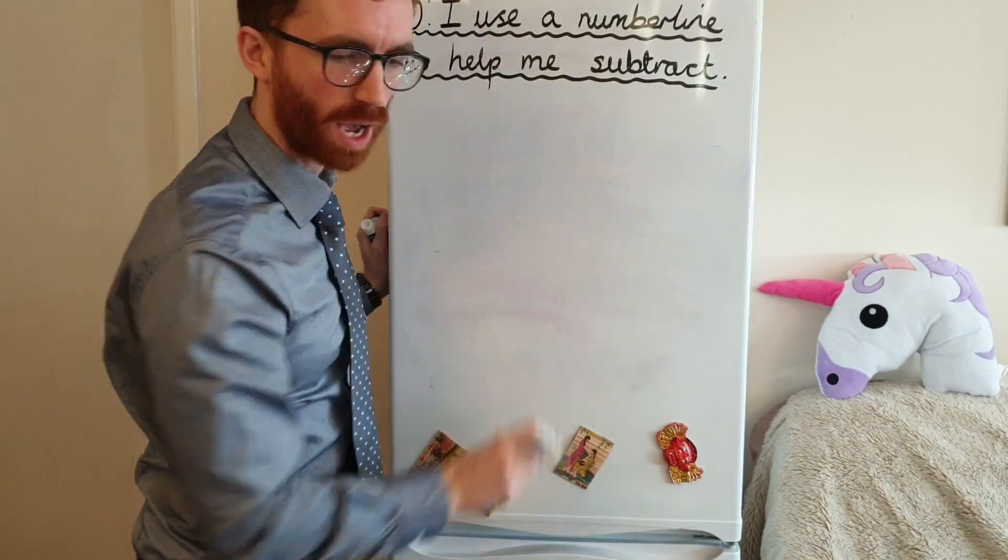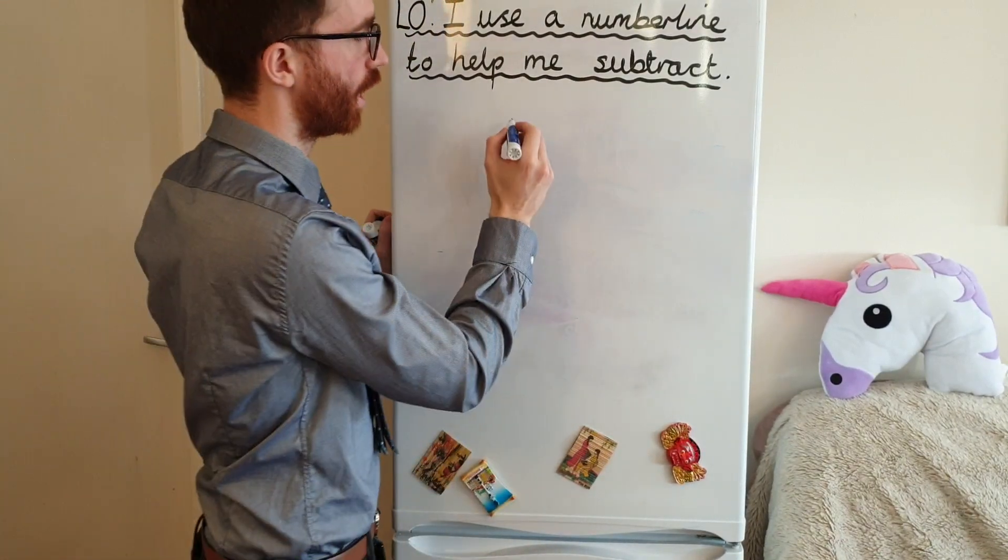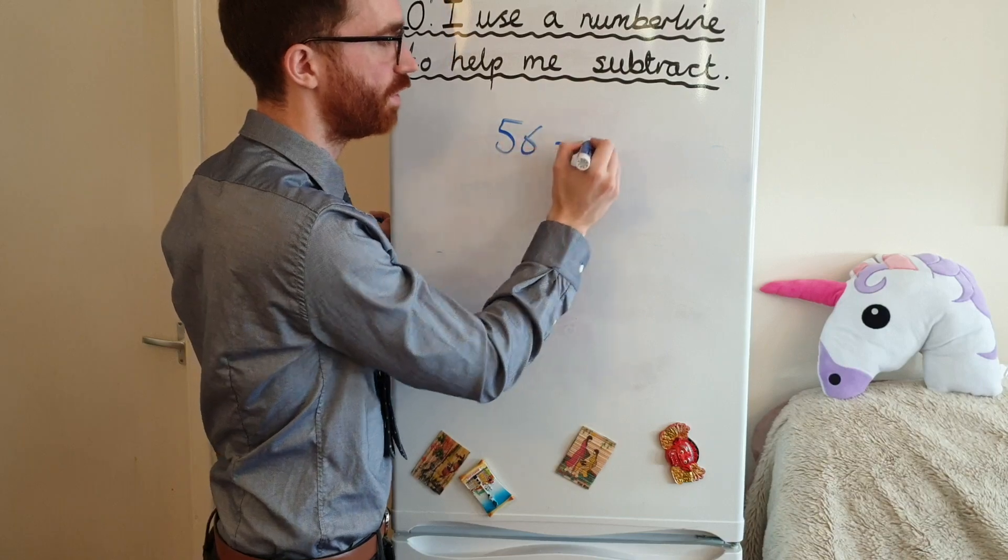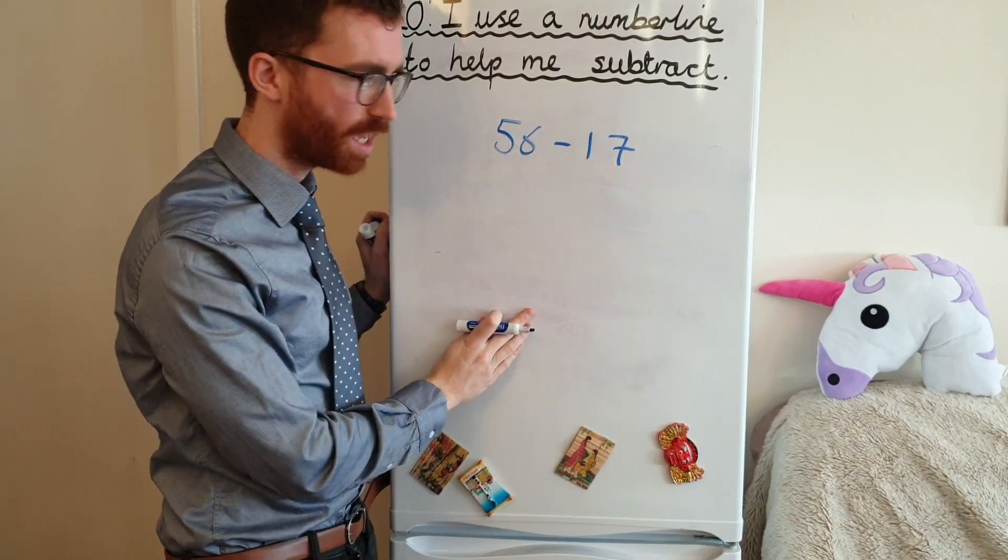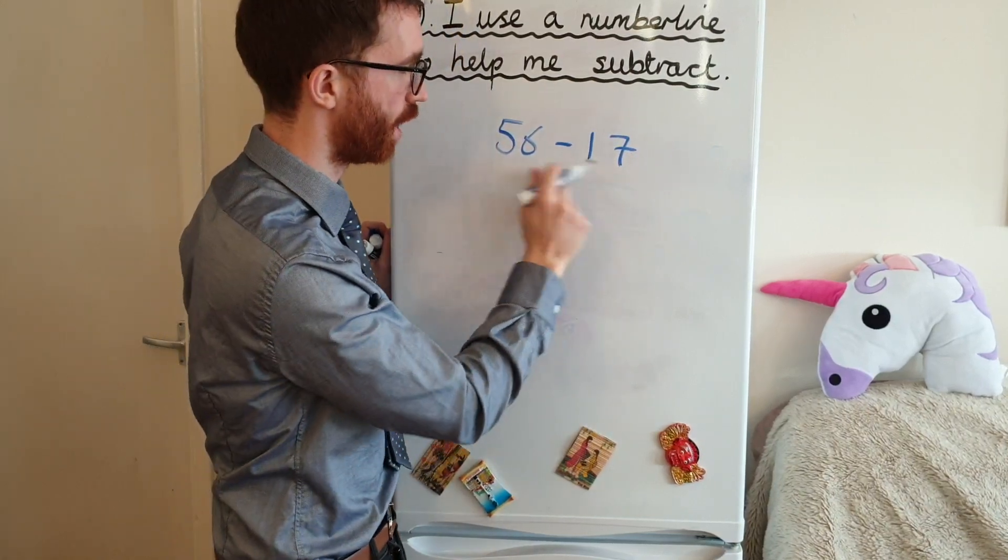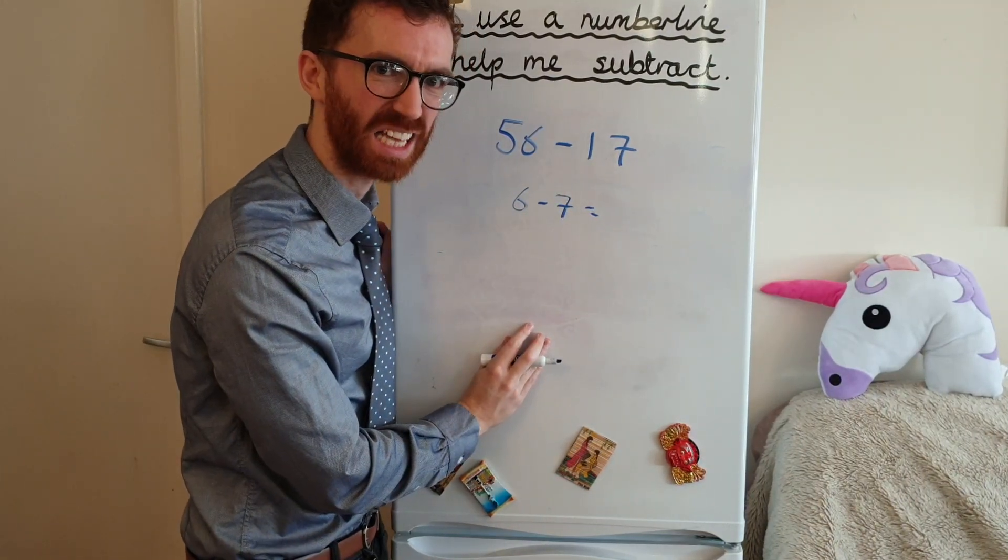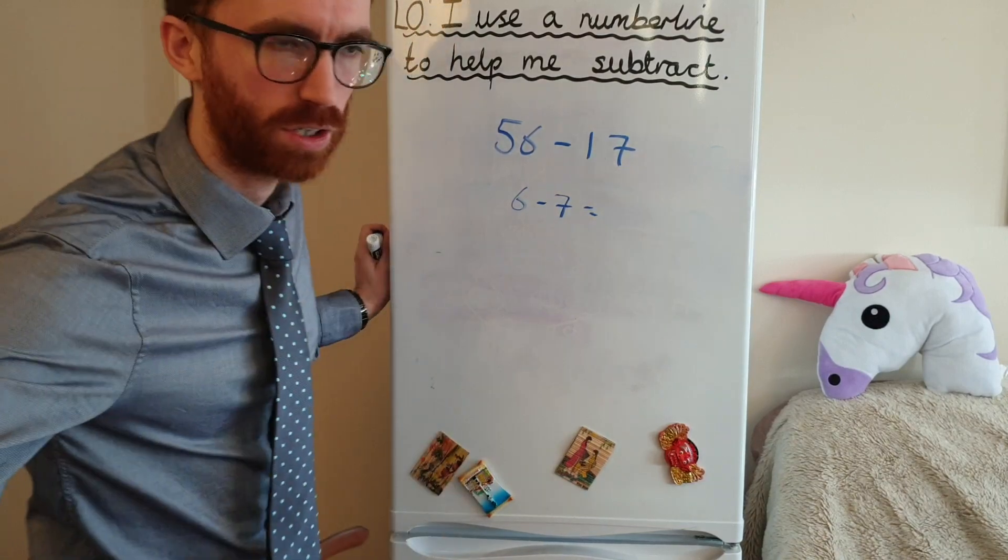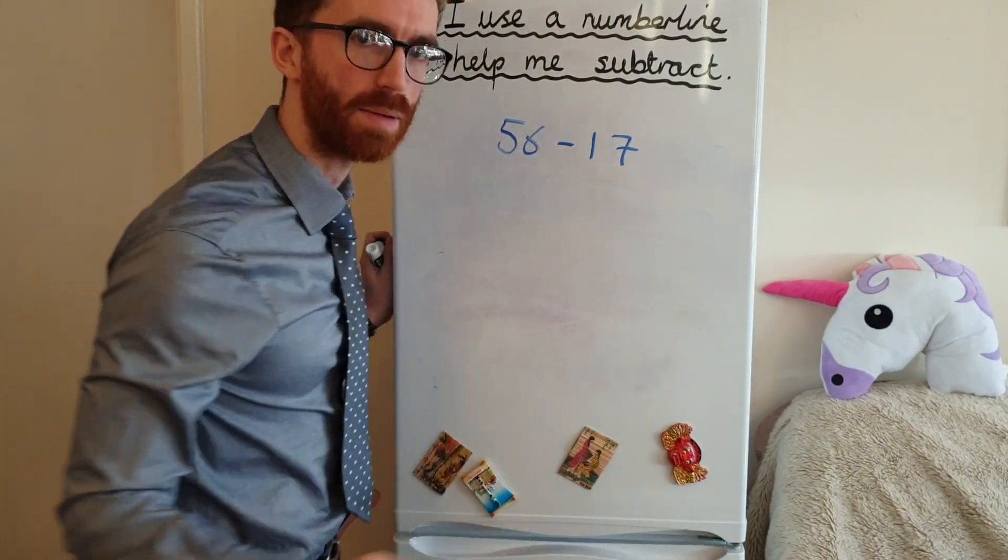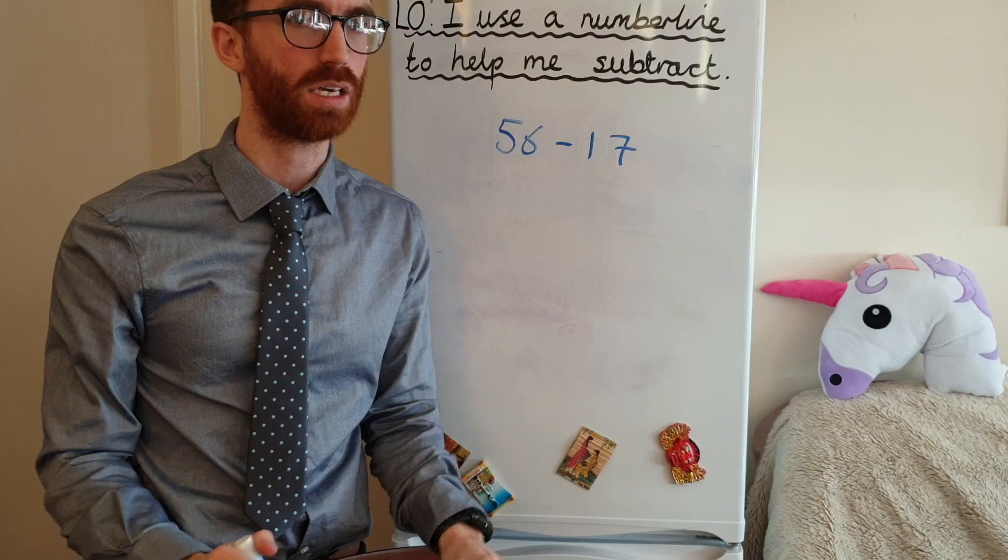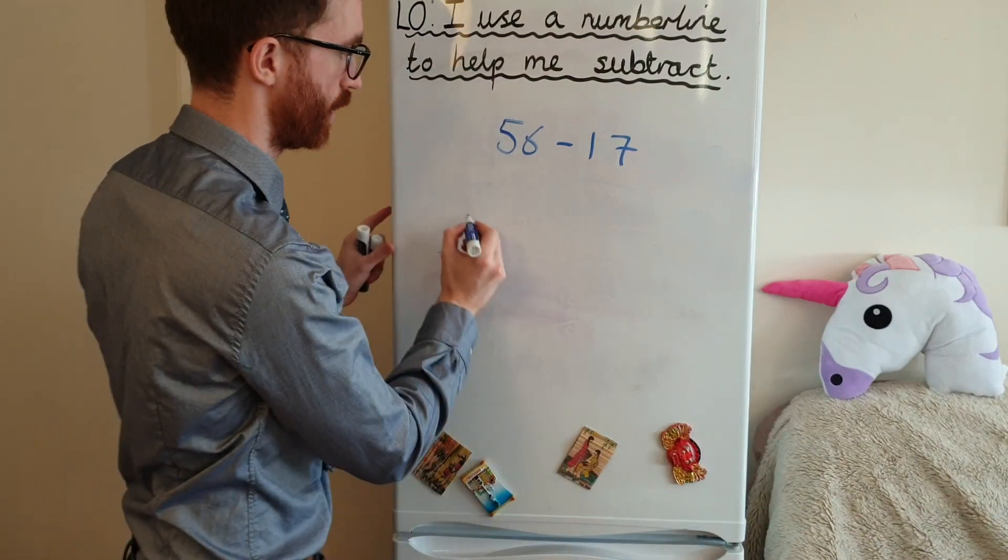Sometimes, however, I might get a question like this, 56 take away 17. And now when I say to myself, right, so 6 take away 7 is, oh, and I get a little bit stuck. So we're going to work out the method that's going to make this really easy for us. It is the number line. Here it is.